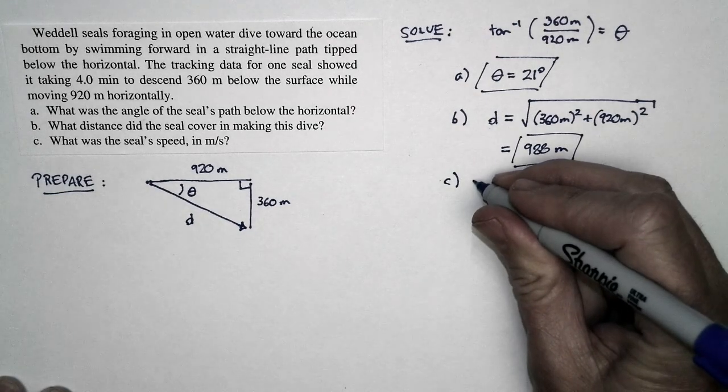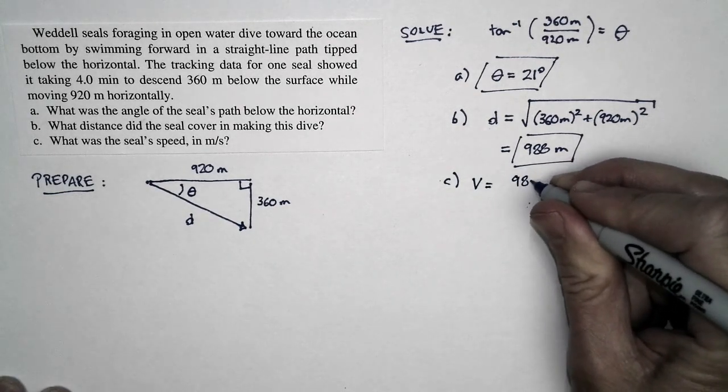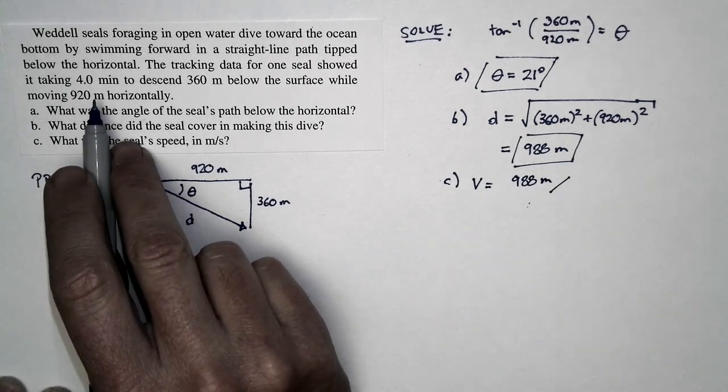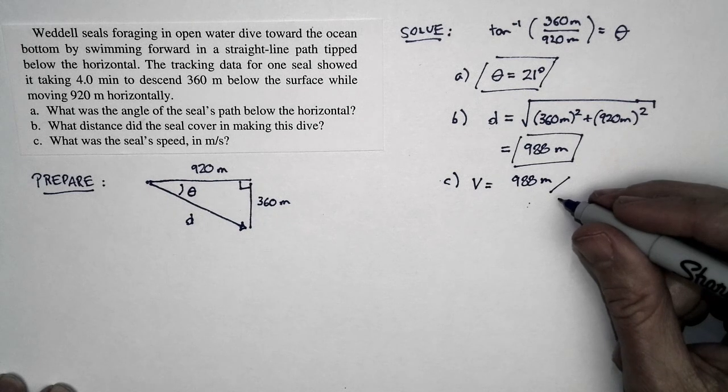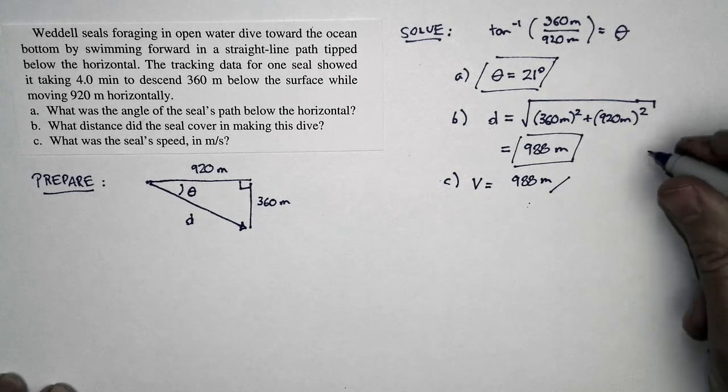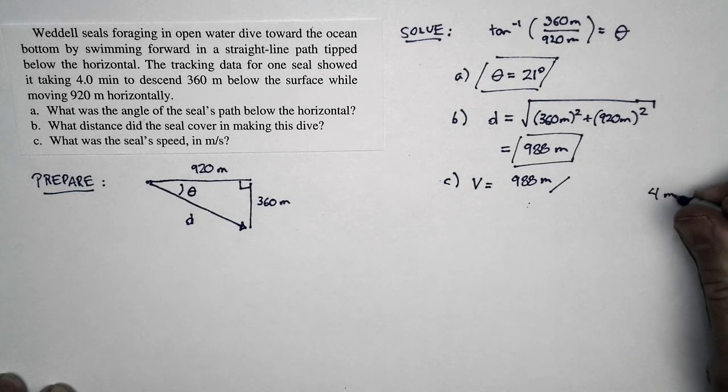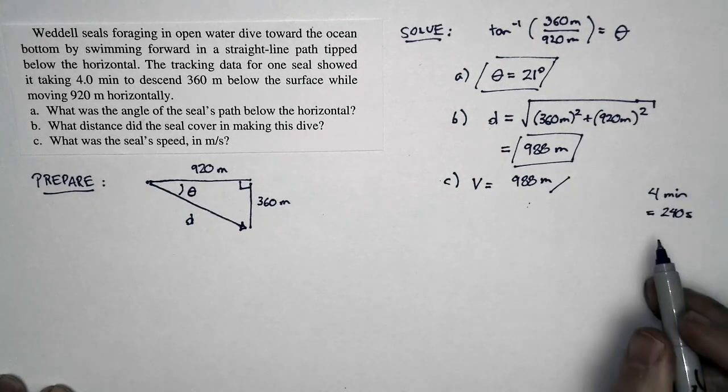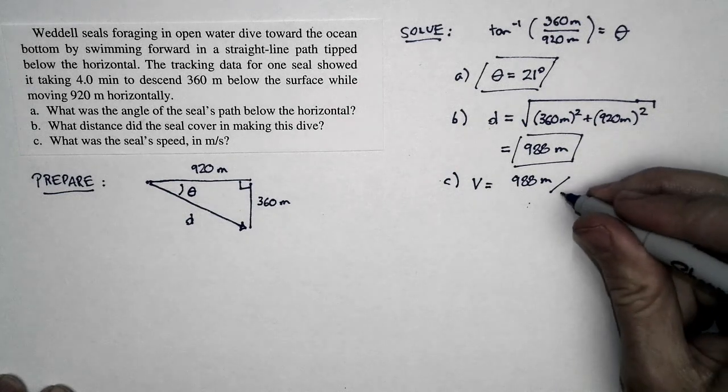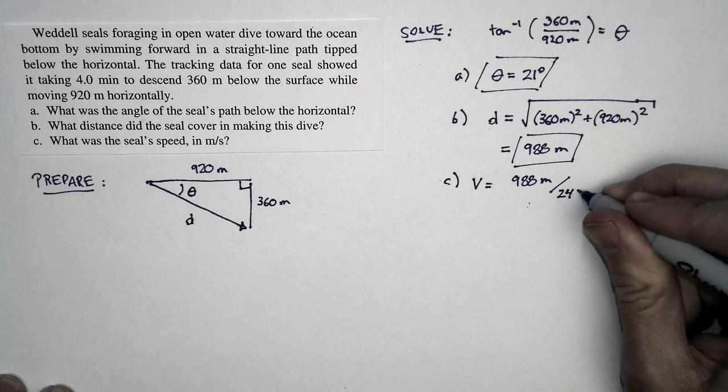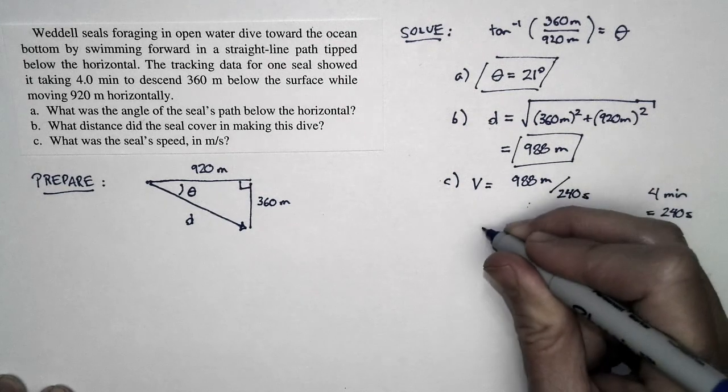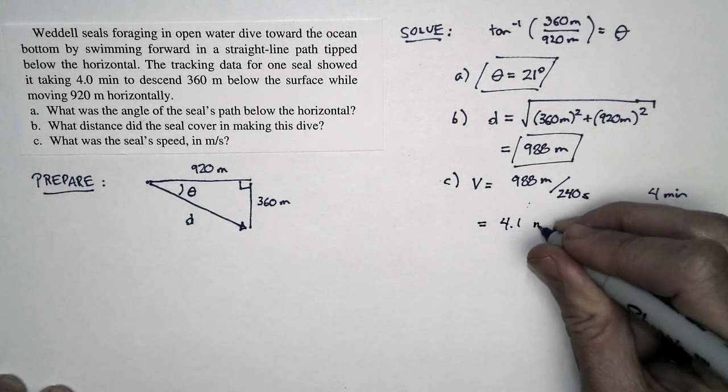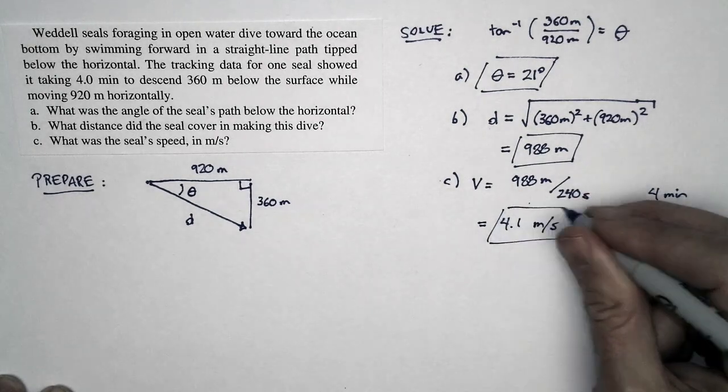The speed is 988 meters in a time of four minutes. But I'm just going to put in what this time is in seconds. Four minutes is just equal to 240 seconds, so I'm just going to cut to the chase and put that in. 988 meters in a time of 240 seconds gives me a speed of 4.1 meters per second. That's my answer to part C.